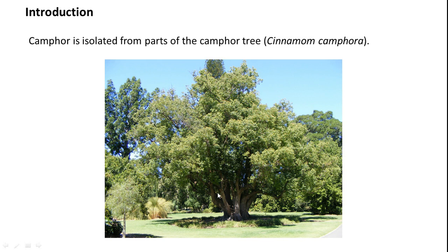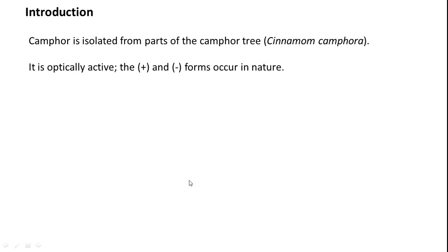Camphor is an optically active substance. In nature, if an optically active secondary metabolite is produced by a plant, we usually get a single isomer — a single enantiomer. But here you will see both dextro and levo isomers staying together. It is isolated as a racemic mixture.